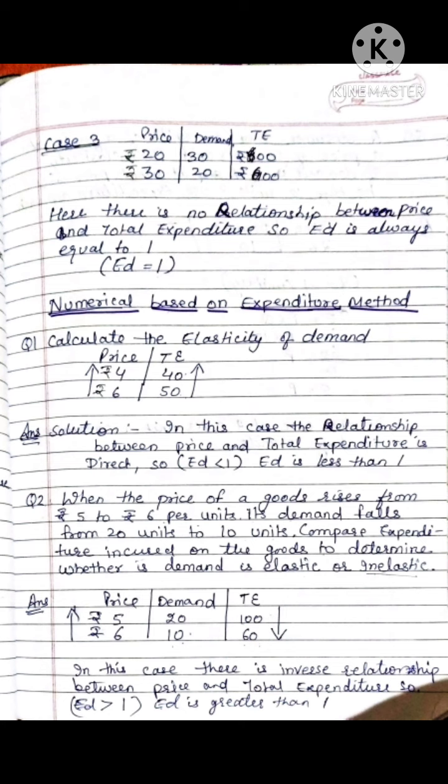Case 3: If the price increases from 20 to 30, and demand decreases from 30 to 20, total expenditure is 20 × 30 = 600, and 30 × 20 = 600 as well. Both are equal — the level is exactly the same. There is no relationship between price and total expenditure, so elasticity of demand is always equal to 1.